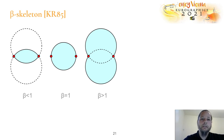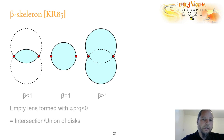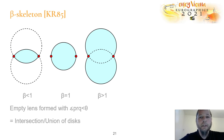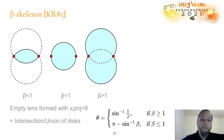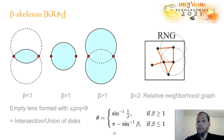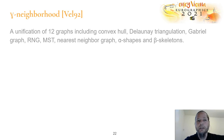Next is the beta skeleton. Lenses are formed between the intersection or union of disks at the two red-shaded points, depending on whether beta is smaller or larger than 1. If these lenses are empty, then the edges between the two red-shaded points are part of the beta skeleton. There is a relation between the angle theta between points p and q and the point r on the circle, and interestingly, if beta is exactly 2, this conforms to the relative neighborhood graph. Next is the gamma neighborhood, which is interesting because it unifies 12 graphs, including convex hull, the ones we talked about before, nearest neighbor graph, alpha shapes, and beta skeletons, among others.